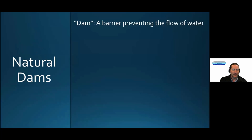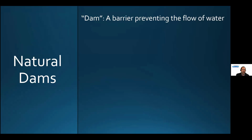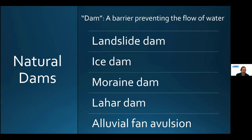We are talking about natural dam failures — past, present, and future. A dam, per Merriam-Webster, is just a barrier preventing the flow of water. Natural dams can take many forms: landslide dams, ice dams, moraine dams related to glaciers, lahars or volcanic activity that dam up water, and alluvial fans where a creek avulses and impedes flow. We're not just limited to our planet — we have some examples on Mars as well.